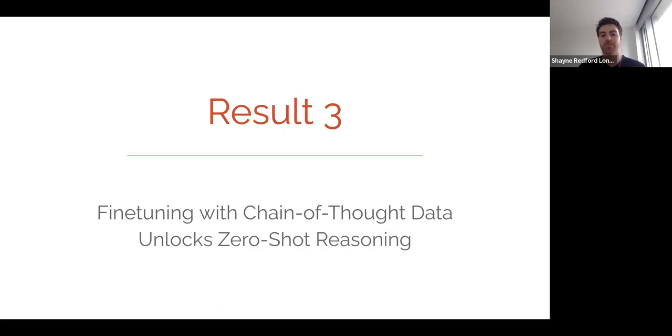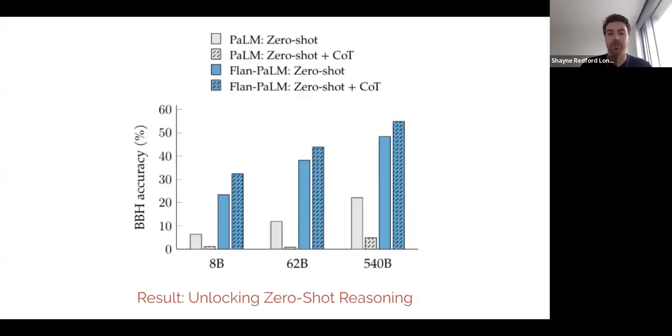The third result looks at fine-tuning with chain-of-thought data and how that unlocks new zero-shot reasoning abilities. So let's look at the 540 billion parameter model, and it's benchmarking its results on BigBench Hard, which is a subset of the BigBench suite of tasks, which were also held out during training. So if we look at the gray bars, these are the PaLM model itself, and this is just zero-shot, whereas this is chain-of-thought templates.